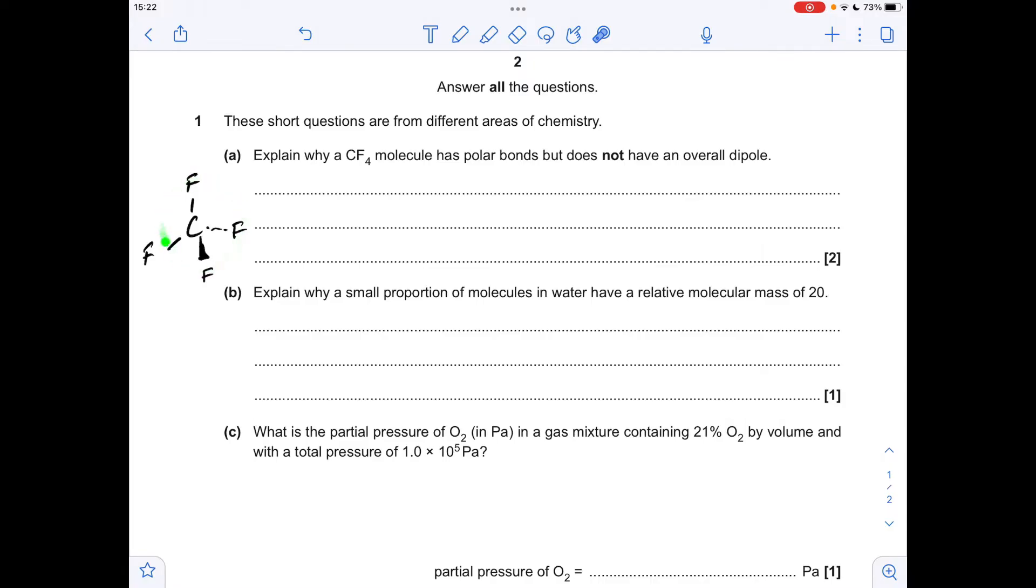Part b: Explain why a small proportion of molecules in water have a relative molecular mass of 20. Well, this is down to isotopes. So you could have a water molecule with the deuterium isotope in there for hydrogen, so H-2, still got 16 for the oxygen, and you can see that adds up to 20.